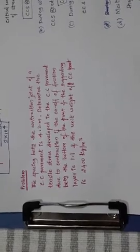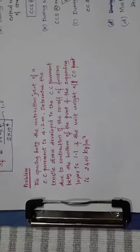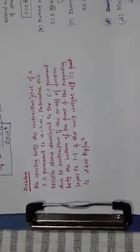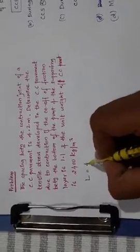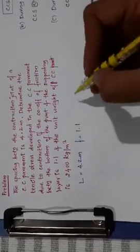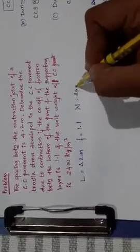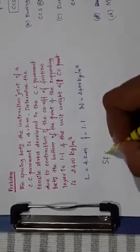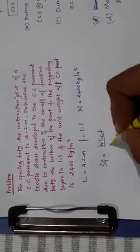Let us now see one problem. The spacing between the contraction joints of a CC pavement is 4.2 meters. Determine the tensile stress developed in the CC pavement due to contraction, if the coefficient of friction between the bottom of the pavement and the supporting layer is 1.1, and the unit weight of cement concrete is 2400 kg/m³. So from the problem: Lc = 4.2 m, f = 1.1, W = 2400 kg/m³.